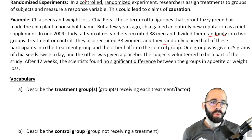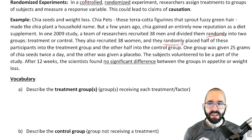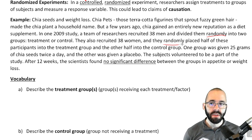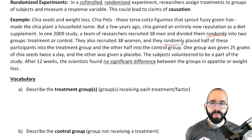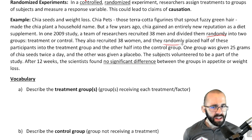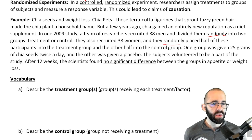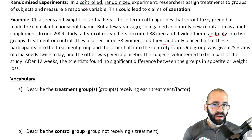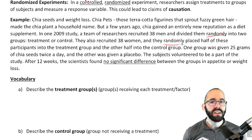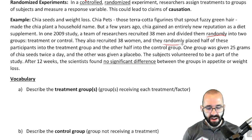One group was given 25 grams of chia seeds twice a day; the other was given a placebo. Subjects volunteered to be part of this study. After 12 weeks, the scientists found no significant difference between the groups in appetite or weight loss.